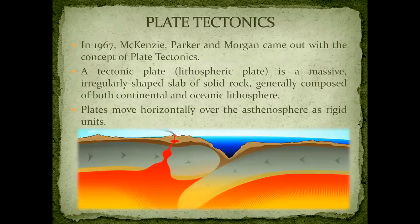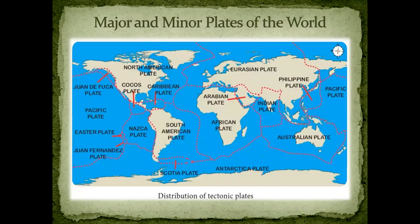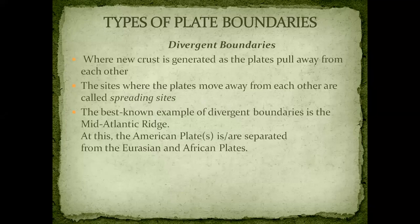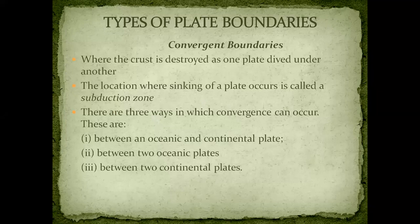At the Mid-Atlantic Ridge, the American plate is separated from the Eurasian and African plates. If you look at the map on page number 35 in your book, you can see it on your screen as well. The American plates are separated from the Eurasian and African plates. So this is about divergent boundaries, and you can see it clearly on your screen.